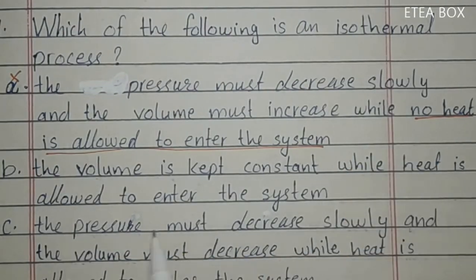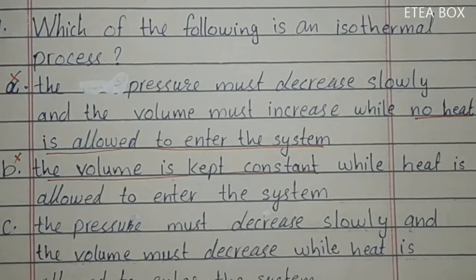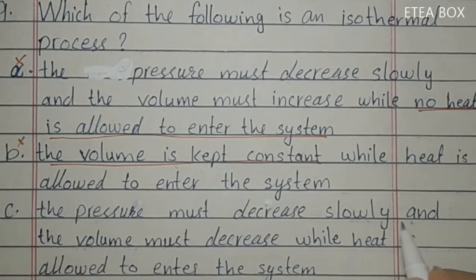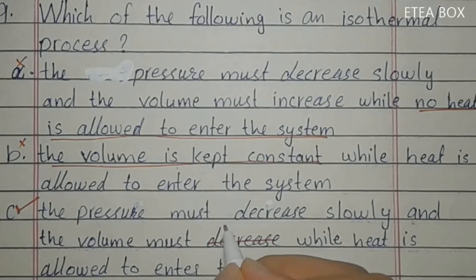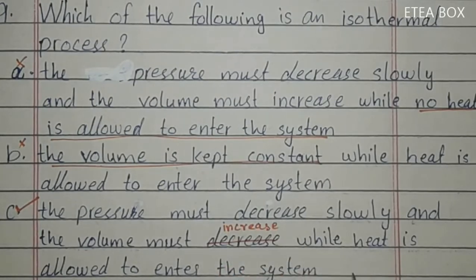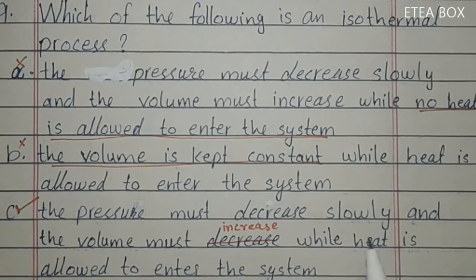Option B says volume is kept constant while heat is allowed to enter — this is incorrect because volume changes in isothermal process. Option C says pressure decreases slowly, volume increases, and heat is allowed to enter the system — this is correct. When pressure decreases, volume increases; gas molecules move apart and temperature tends to decrease; heat is allowed to enter which stabilizes the temperature, keeping it constant. So option C is correct.